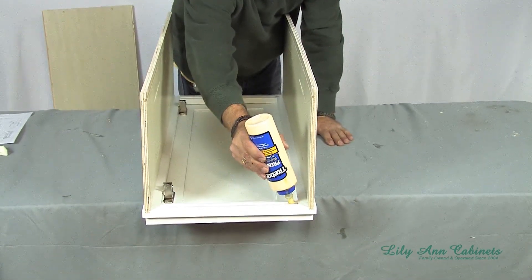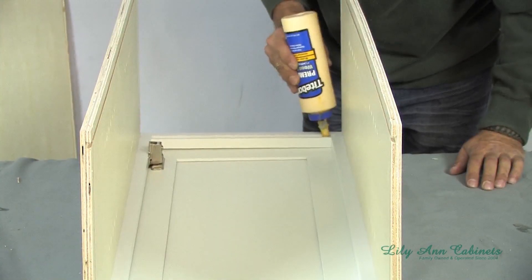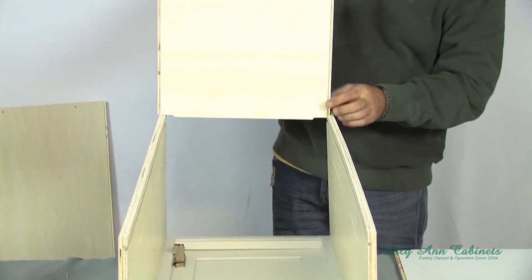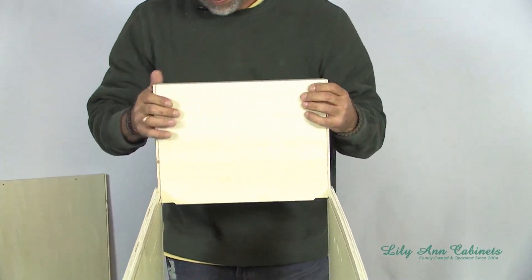After both sides are finished, apply wood glue to the groove in the bottom and top. Then you can easily slide the bottom and top down into place.